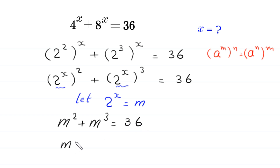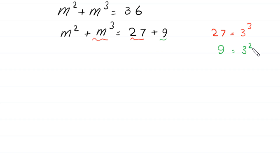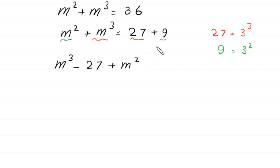Next, m squared plus m cubed equals 36, and this 36 can be written as 27 plus 9. Now, 27 is the same as 3 cubed, so we associate it with m cubed; and 9 is the same as 3 squared, so we associate it with m squared. Moving everything to the left-hand side, the equation becomes m cubed minus 27 plus m squared minus 9 is equal to 0.